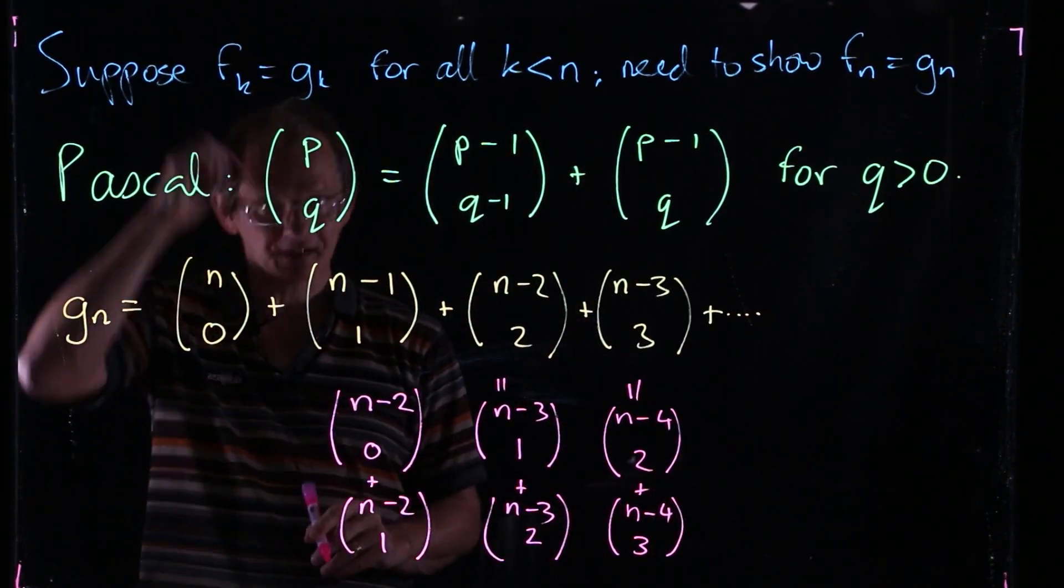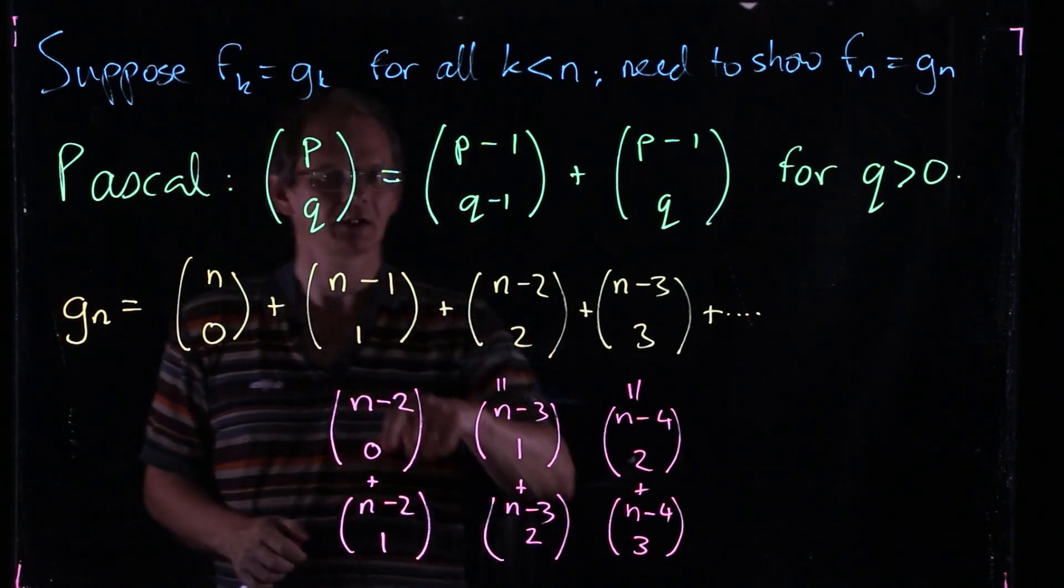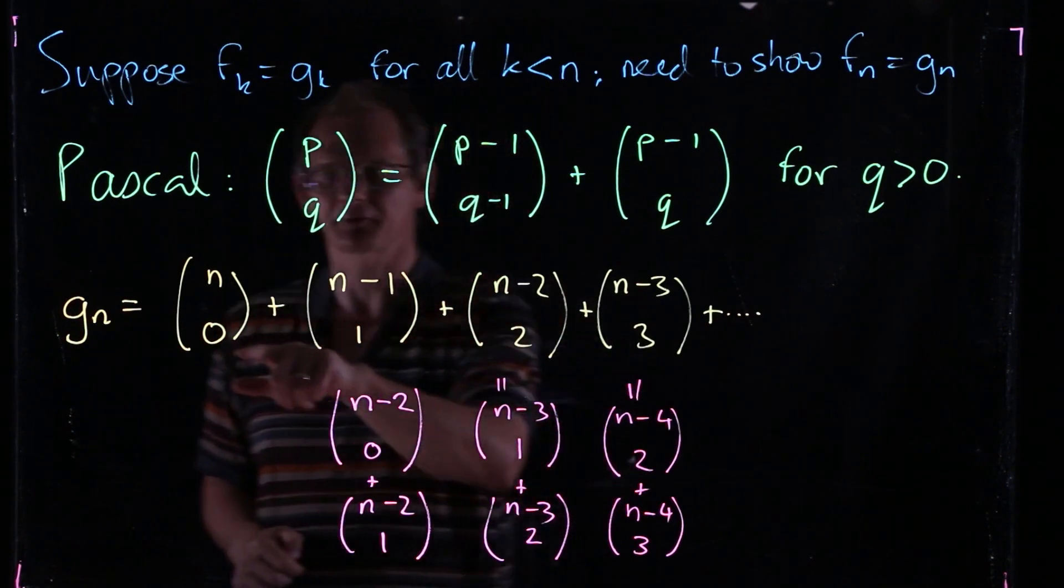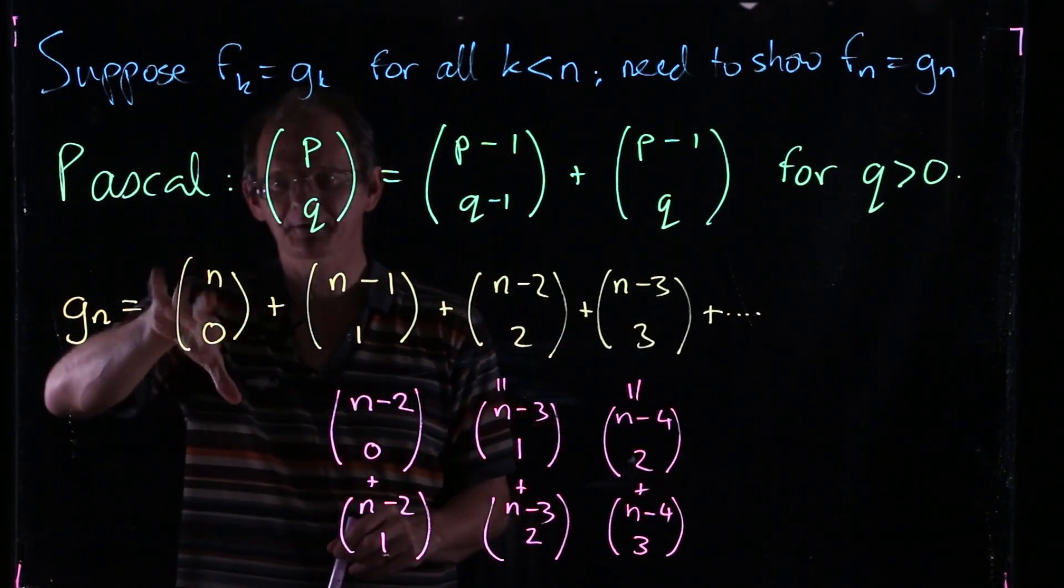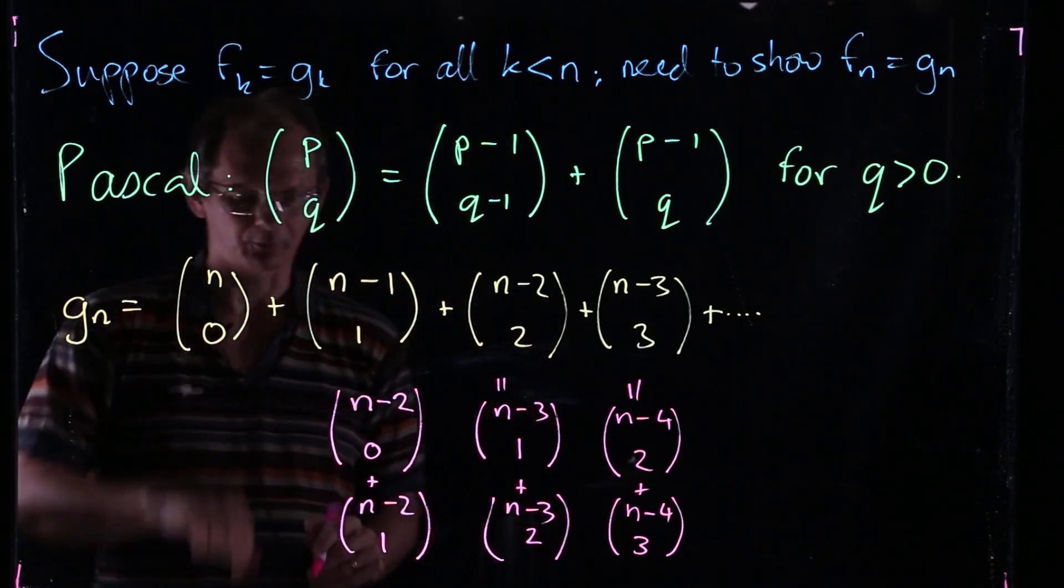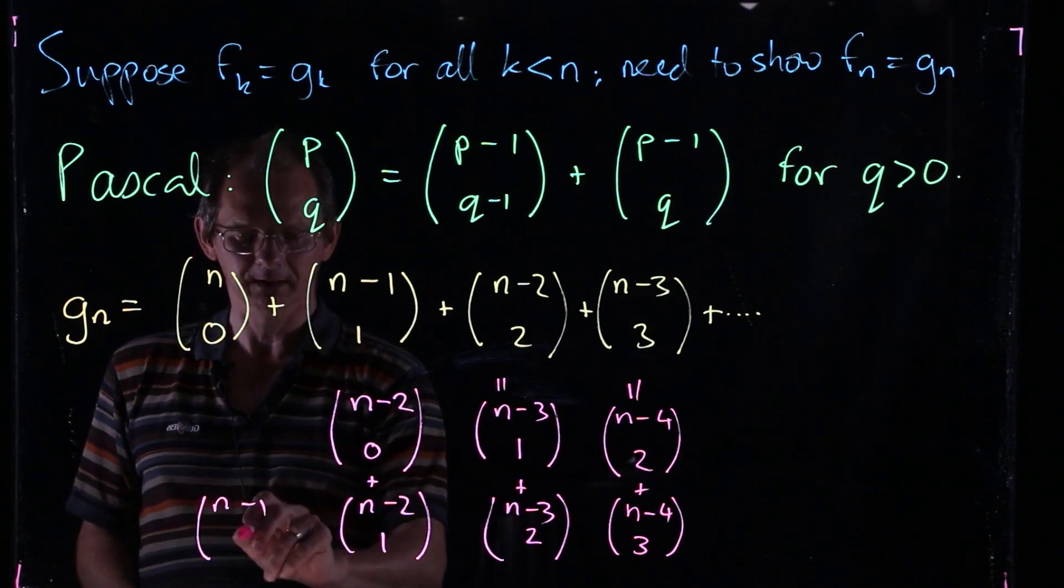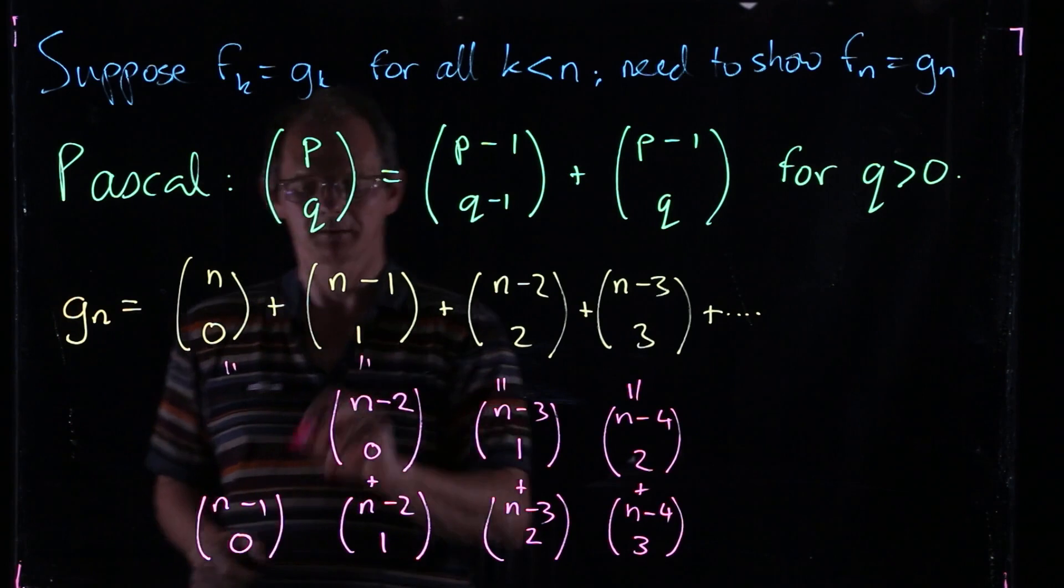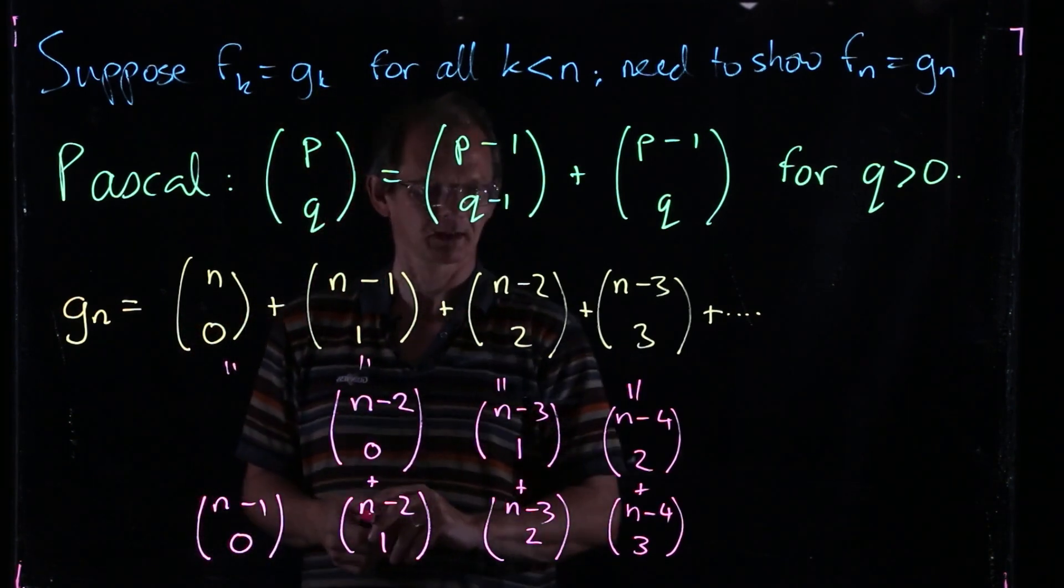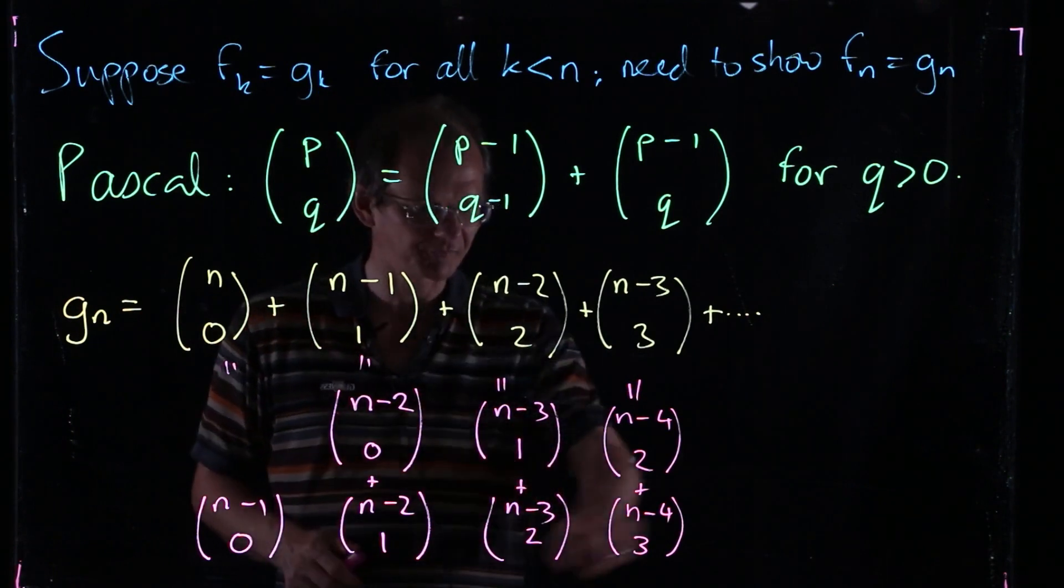But then there's this first term here. We need to do this one a little bit differently because this Pascal's relation is only valid when Q is strictly positive. And here Q is 0. So what is this n choose 0? Anything choose 0 is just equal to 1. So this is just equal to 1. And n-1 choose 0 is also equal to 1. So we can replace that by just n-1 choose 0. So Gn is the sum of all this stuff here.